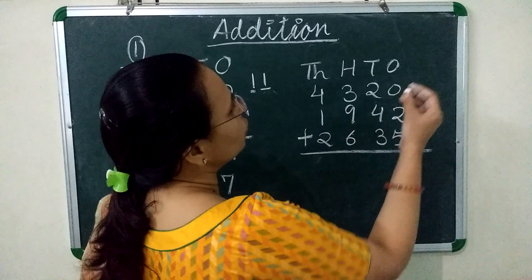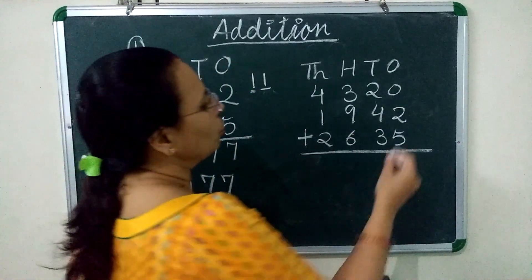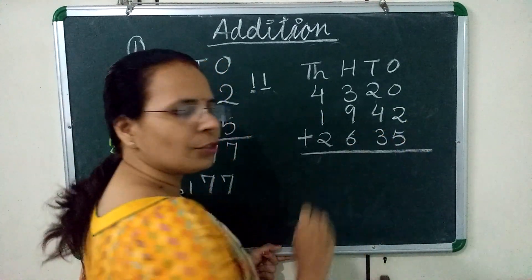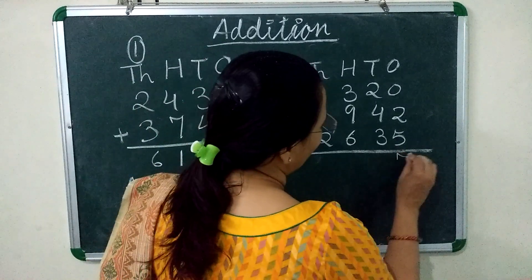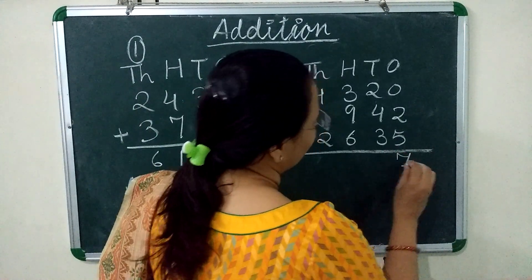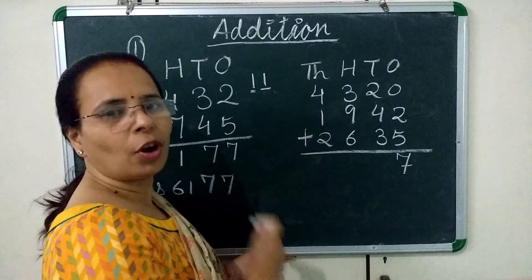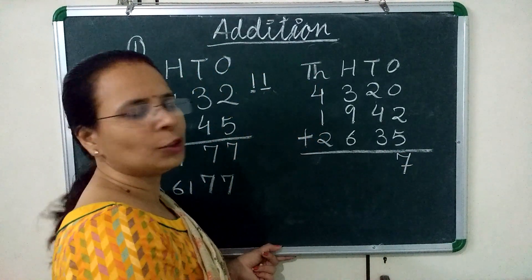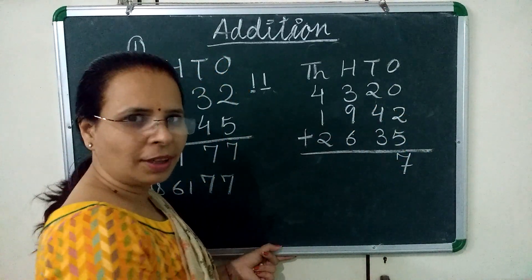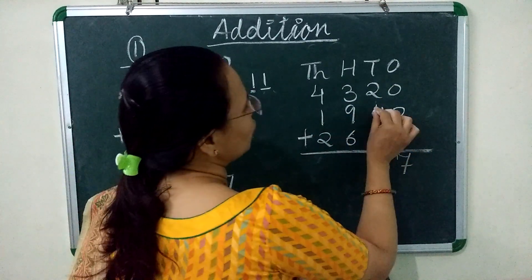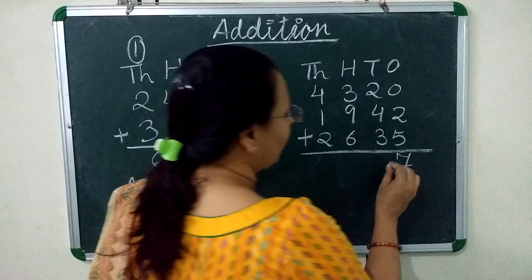At the 1's place: 0 plus 2 is 2, and 2 plus 5 is 7. Now we move to the 10's place. 2 plus 4 is 6, and 6 plus 3 is 9.